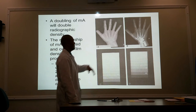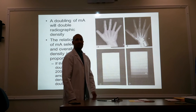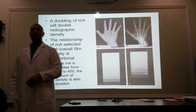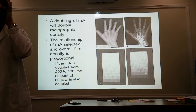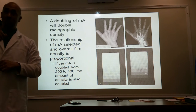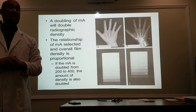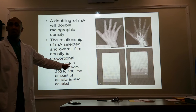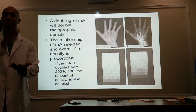Here's the example: 200 MA — too light. Let's go shoot it again. Now it's twice as dark. But you've got to be cautious when manipulating MA or time or MAS as one unit, because when you're manipulating MAS, you're also manipulating patient exposure. If I doubled my MA, I've doubled my patient exposure — because now I've produced twice as many electrons, twice as many x-rays.